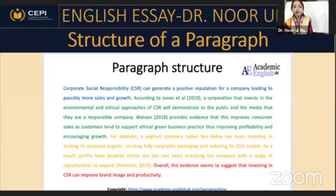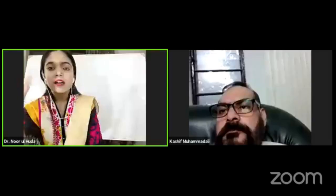In green, there is an explanation that enhances the topic sentence. After that, in yellow, a statistic has been given — adding validity to the point, showing that the claim is supported by evidence.